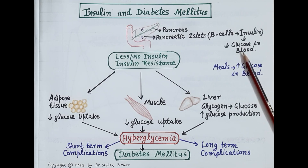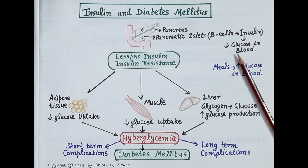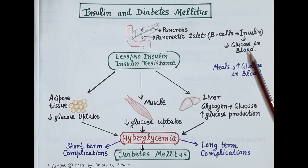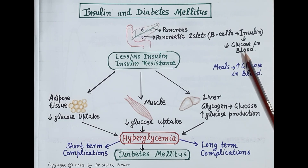Now the question arises: how does insulin reduce levels of glucose in the blood? Insulin stimulates uptake of glucose in the blood by body cells, so glucose goes into the body cells and this reduces levels of glucose in the blood.